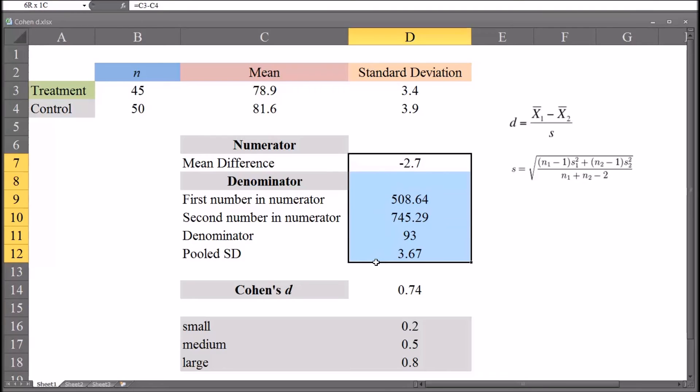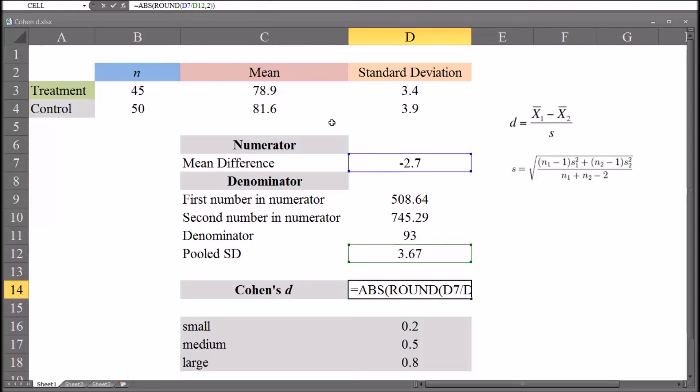So now we have all the information we need to calculate Cohen's D. And you can see that Cohen's D, as consistent with the formula here, is the numerator divided by the denominator. Now you might be wondering what these other functions are. Well, I've rounded it to two places. That's what the round function is for. And abs is absolute value. So we have a Cohen's D of 0.74.